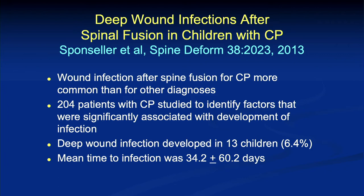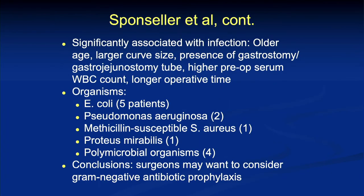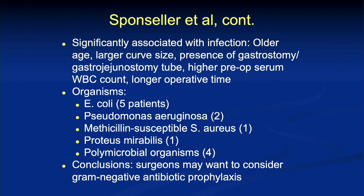Let's start with infection. Paul Sponseller did a lot of work in this space. In 2013, looking at 204 patients, deep wound infection developed in 6% with a mean time to infection of 35 days. Factors associated with deep wound infection included older age, larger curve size, and presence of a G-tube — a foreign body increases infection risk. George Thompson had done earlier studies showing a VP shunt itself increased infection chances. Of course, longer operative time was also a factor. And looking at organisms — a lot of gram negatives: E. coli, Pseudomonas, plus some staph and polymicrobial organisms.